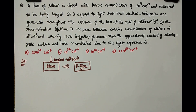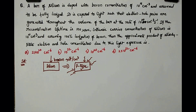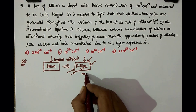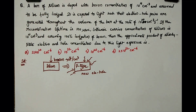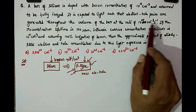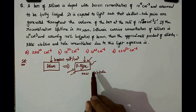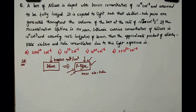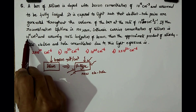Now when this p-type semiconductor is exposed to light, new electron-hole pairs will be generated. This new electron-hole pair generation rate is 10 power 20 per centimeter cube per second. After generation, they will be alive for 100 microseconds — after 100 microseconds they will recombine. That is the reason this 100 microseconds is called the recombination lifetime. For intrinsic silicon, the concentration is 10 power 10 per centimeter cube.